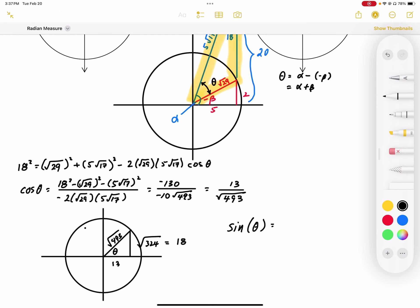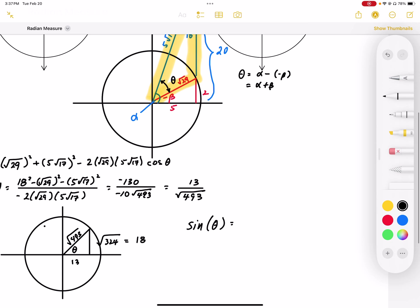Sine of theta, which is really sine of alpha plus beta, is going to be equal to 18 over the square root of 493. Okay, so this represents the solution to that problem.